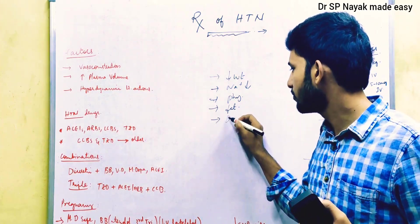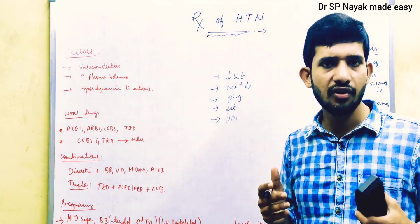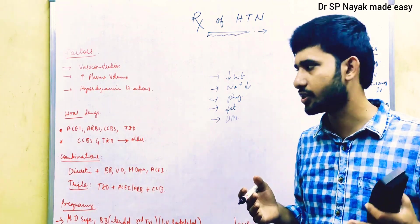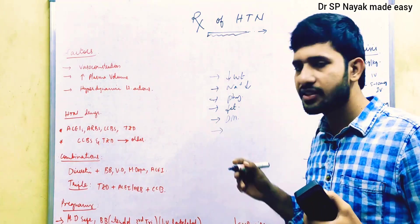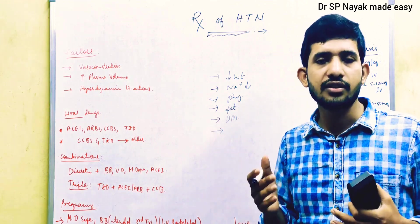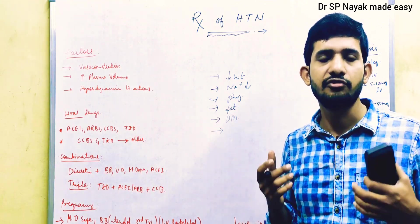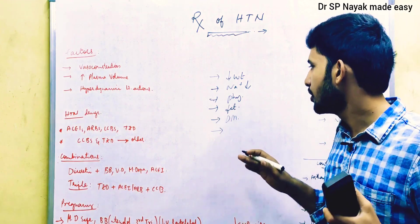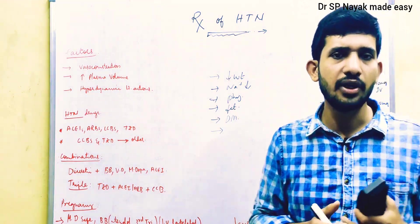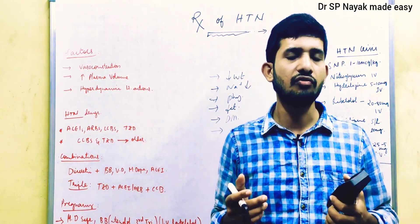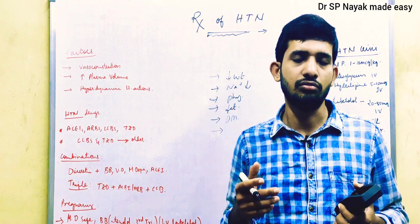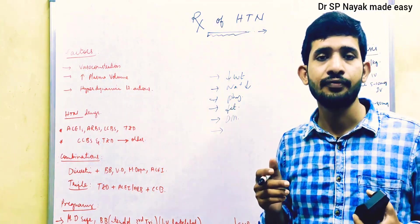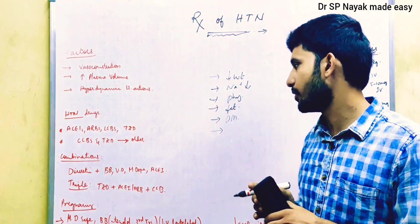If the patient has diabetes, let them control it well using insulin or oral hypoglycemic drugs. If they are sedentary, ask them to have some physical activities in the mornings or evenings. First make the patient follow non-pharmacological therapy, and if this doesn't work, shift to pharmacotherapy.